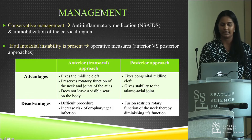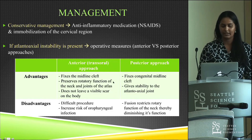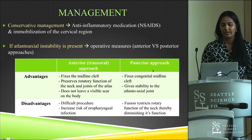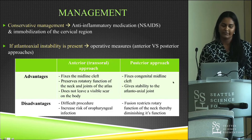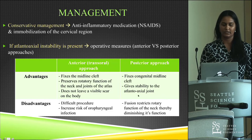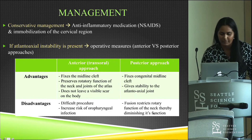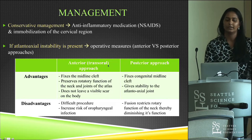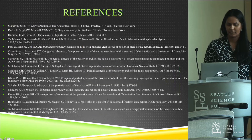For operative management, an anterior transoral approach corrects the anterior arch defect and has the advantages of fixing the midline cleft, preserving rotatory function of the neck and atlas joints, and leaving no visible scar. A posterior approach fixes the posterior arch cleft and provides atlantoaxial stability, but the disadvantage is that the resulting fusion restricts rotatory function of the neck. A disadvantage of the anterior transoral approach is the risk of infection or pharyngeal infections.